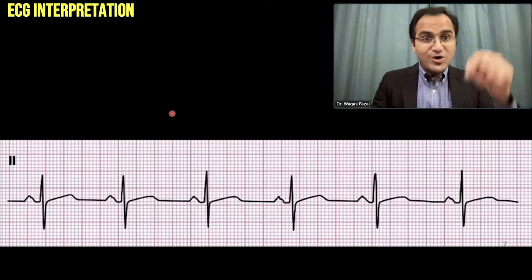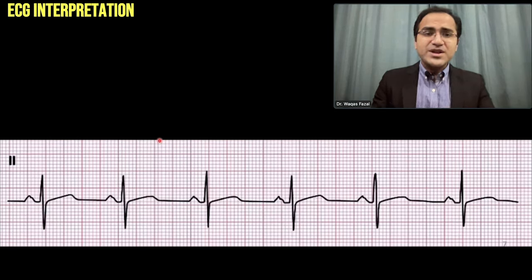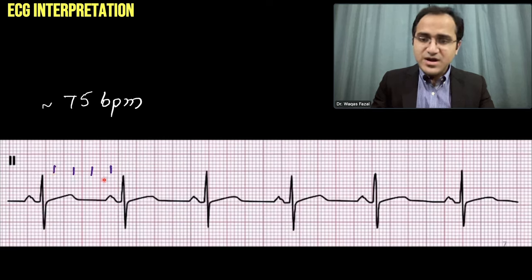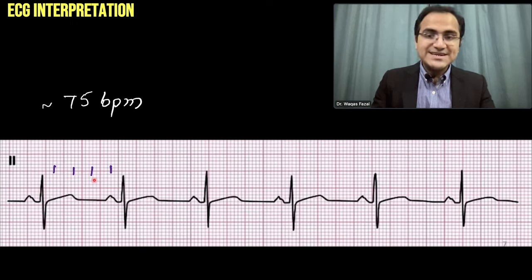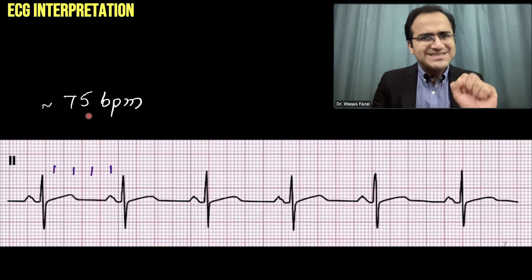Pause the video and solve this ECG yourself. For the answer: counting the large squares — one, two, three, four — giving 300, 150, 100, 75. So the rate of this rhythm is approximately 75 beats per minute.